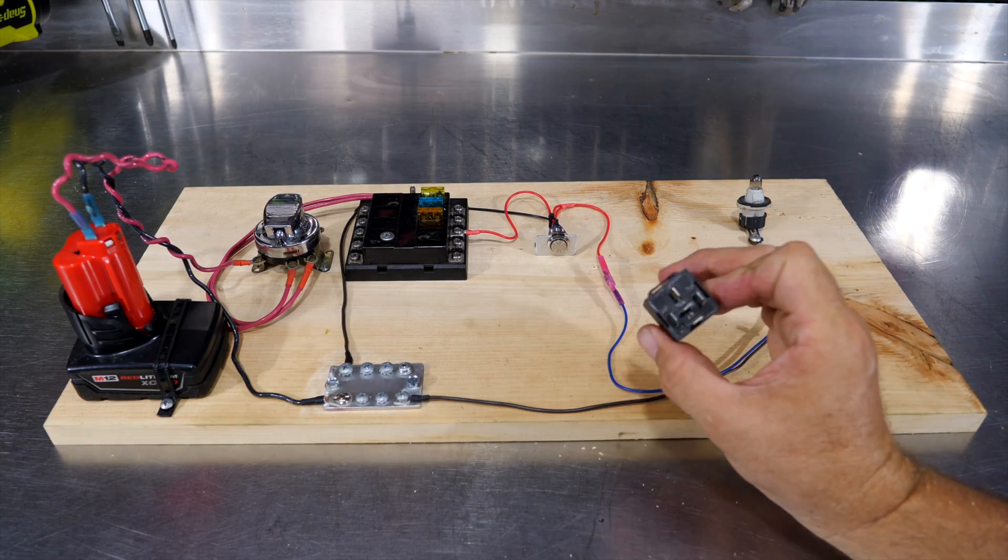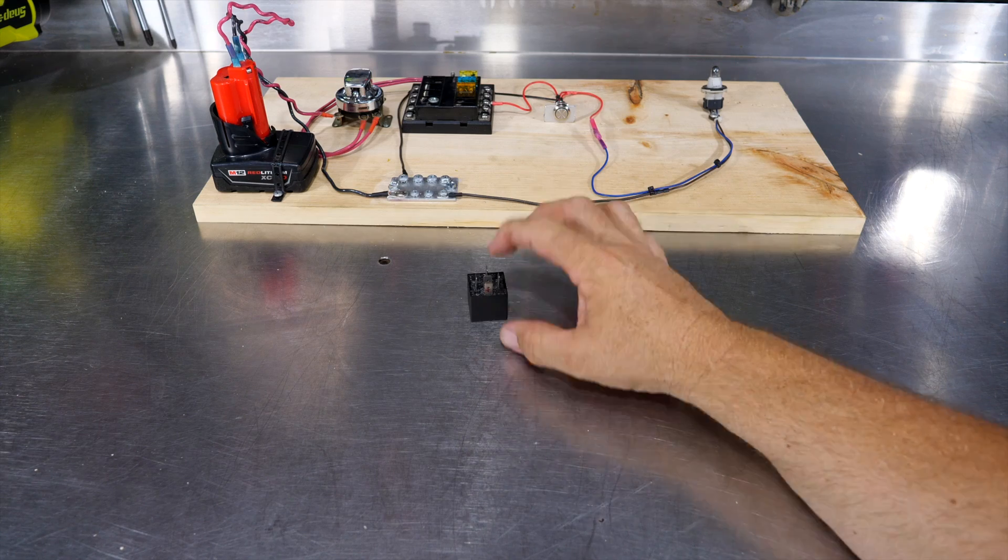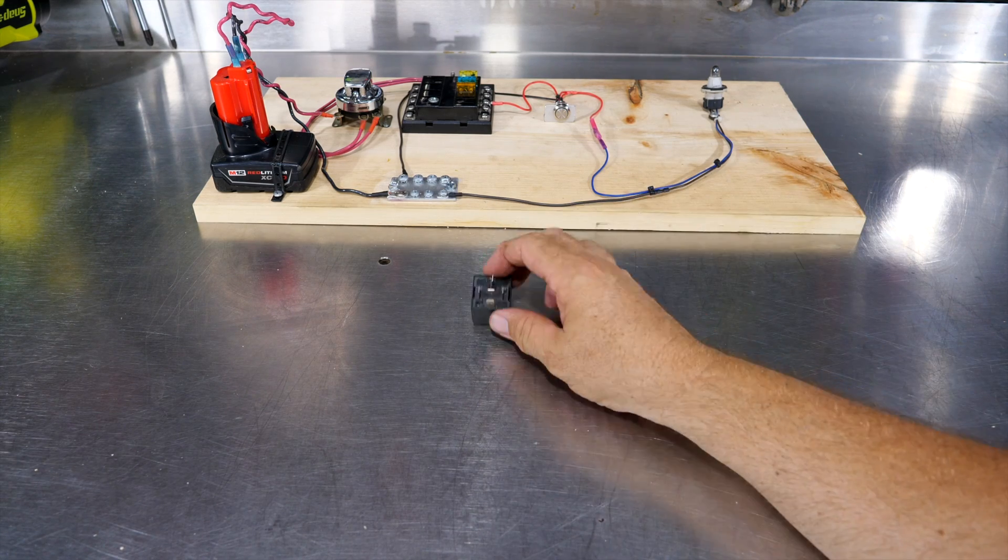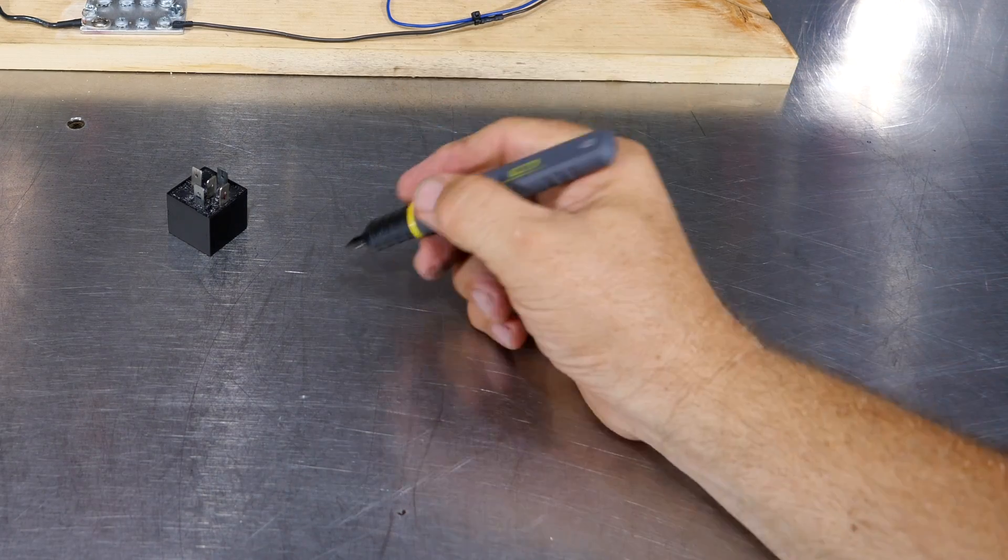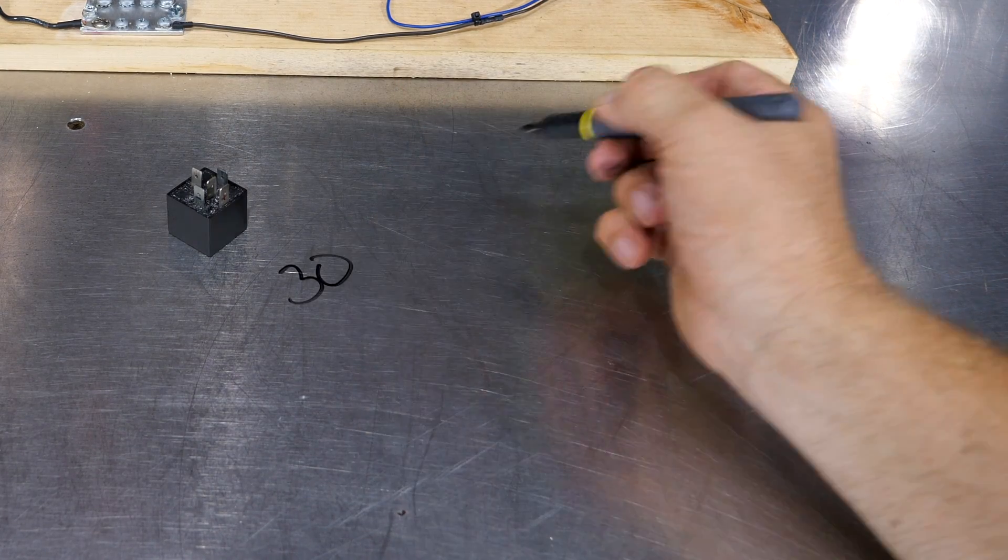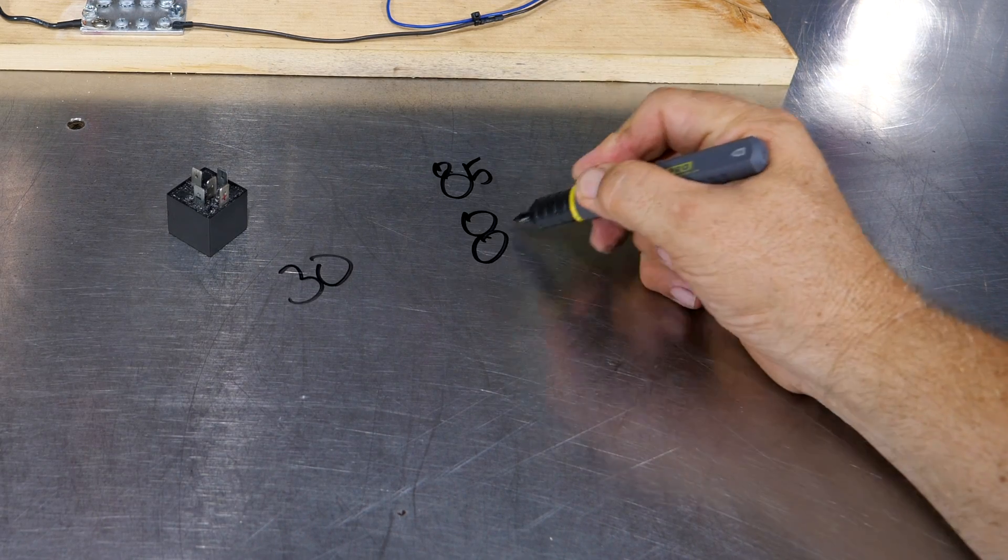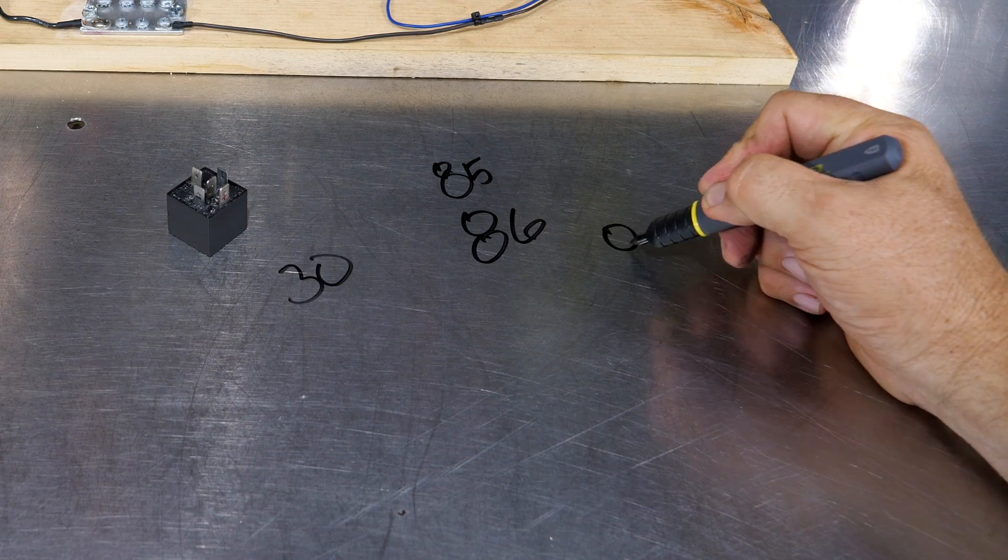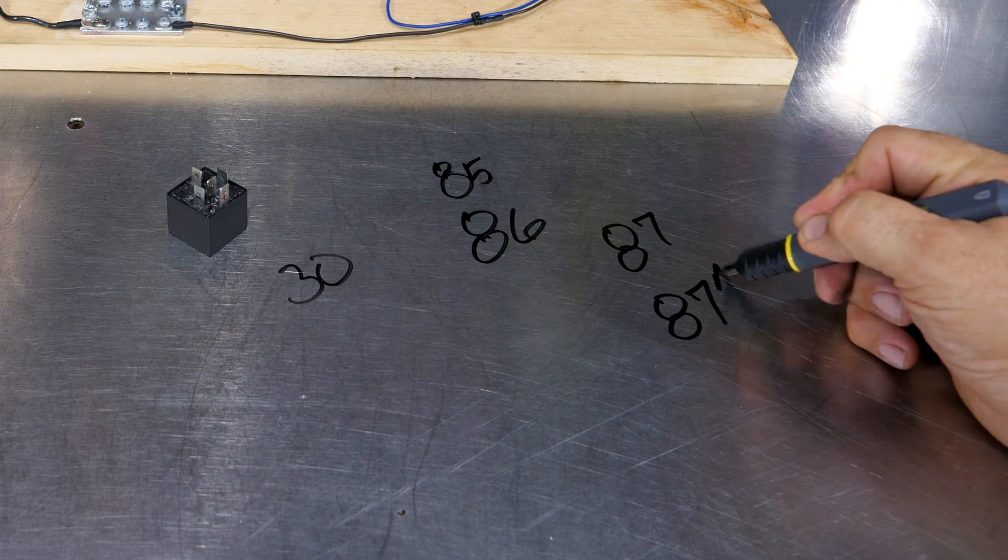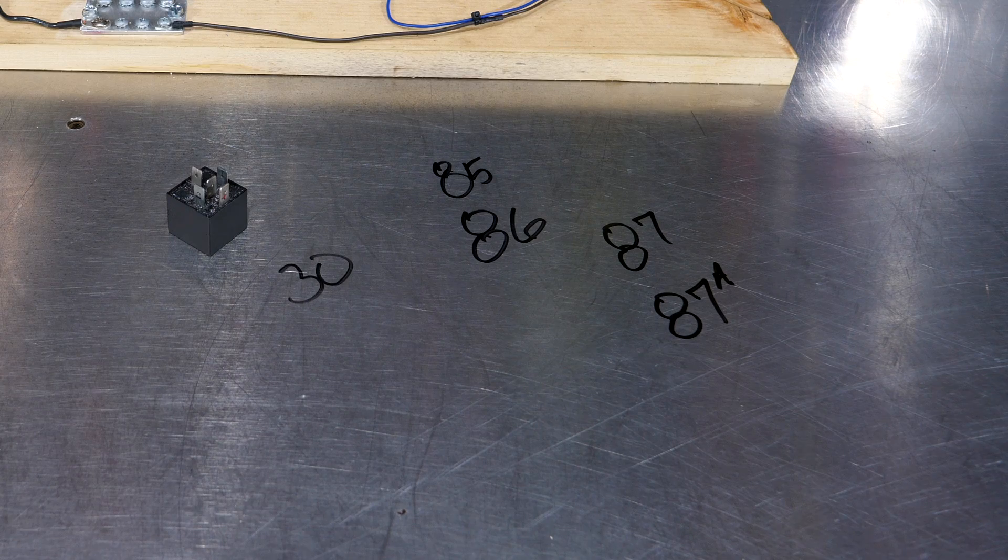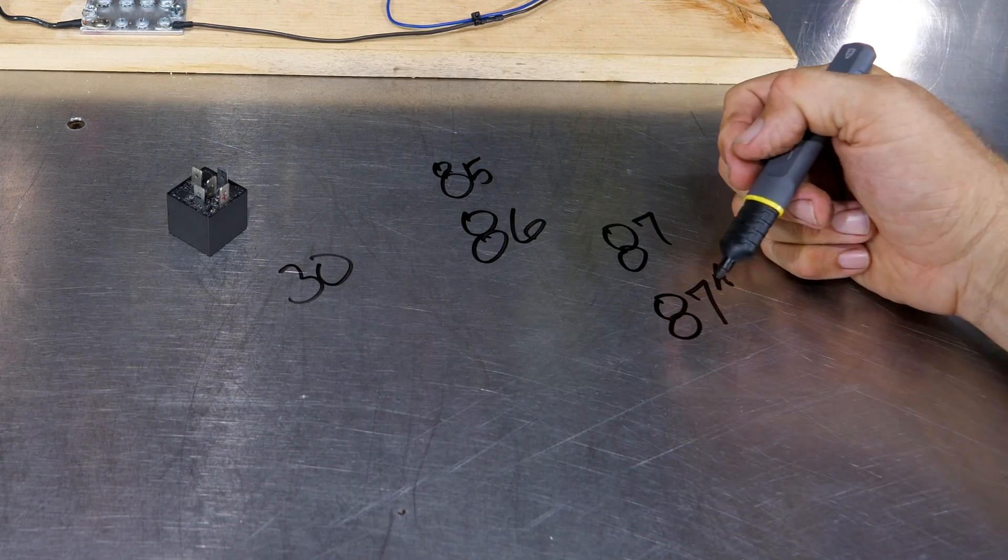Now, how does this work? Well, it's actually pretty simple. Matter of fact, we did a complete video on how to diagnose a relay and we'll link to that so you can look at that if you want more in-depth on a relay. But real quick, basically on these pins, they are numbered 30, 85, 86, 87, and 87A. Don't ask me how they come up with these numbers. Actually, I looked it up one time. Anyway, regardless, that's what they're numbered.